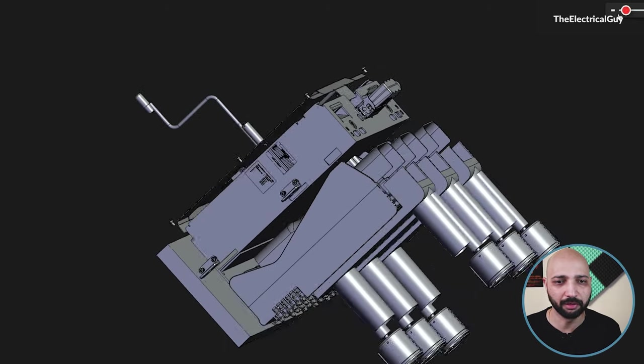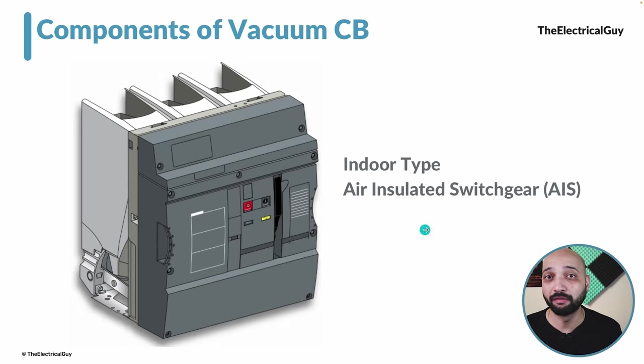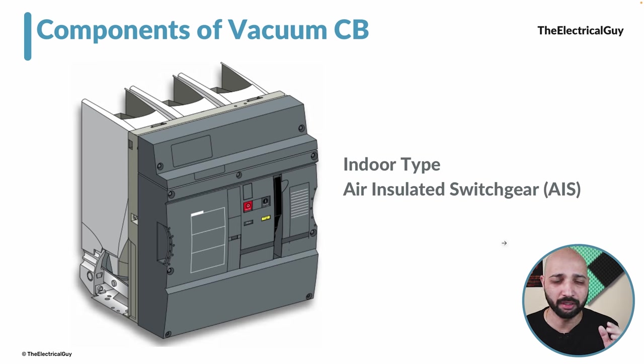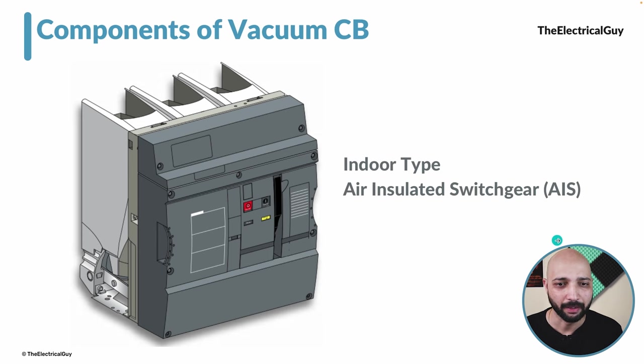This is the vacuum circuit breaker. The point to note here is that what we are going to discuss is the indoor type air insulated switchgear, but most of the parts will be similar for gas insulated type circuit breakers as well. This is how the vacuum circuit breaker looks, and it is most commonly used in medium voltage — below 52 kV.